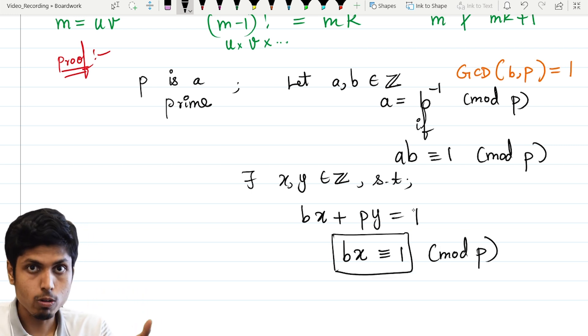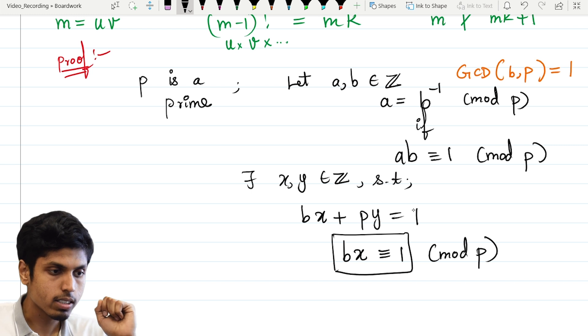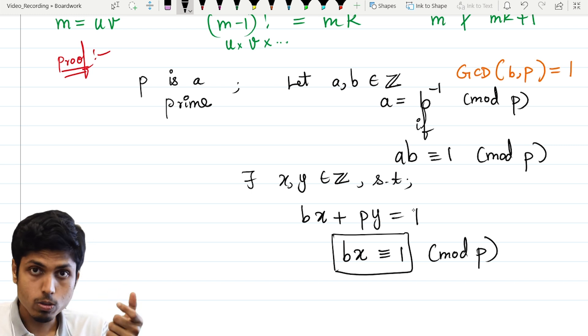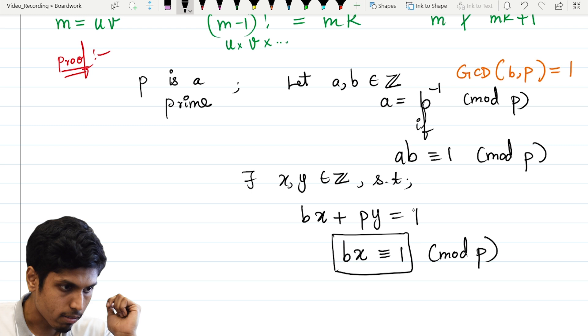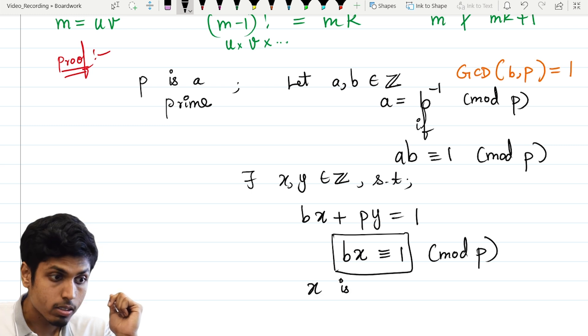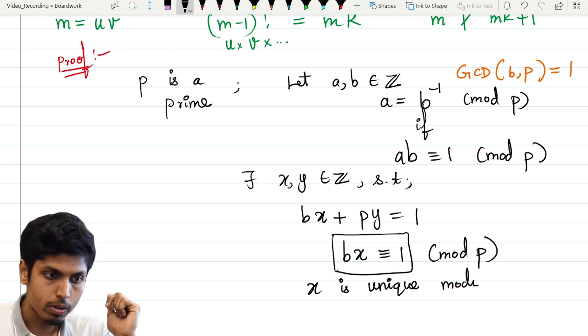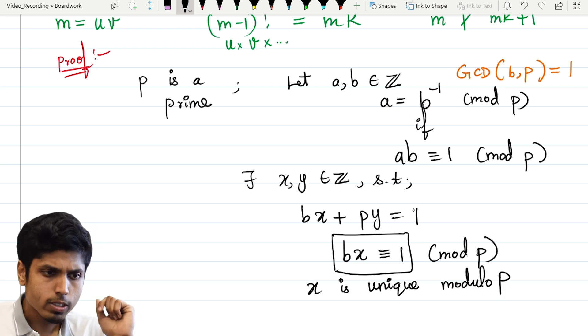Basically, the value of x. So such a thing exists. And also, it is unique modulo p. We also have this solution x is unique modulo p. Let's remember that as well.